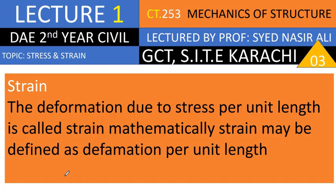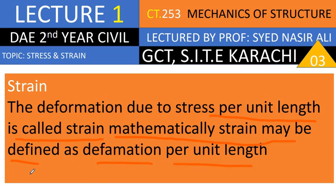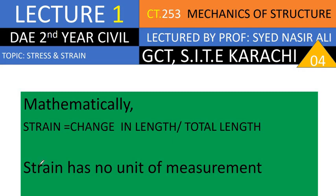Now we are talking about strain. The deformation due to stress per unit length is called strain. Mathematically, strain is defined as deformation per unit length, which equals change in length divided by total length. Strain has no unit of measurement because both the numerator and denominator have units of length, so they cancel out — making strain a unitless quantity.